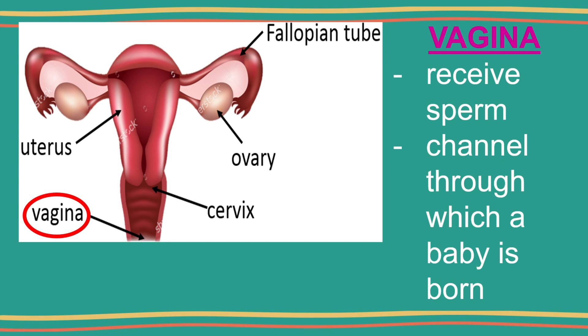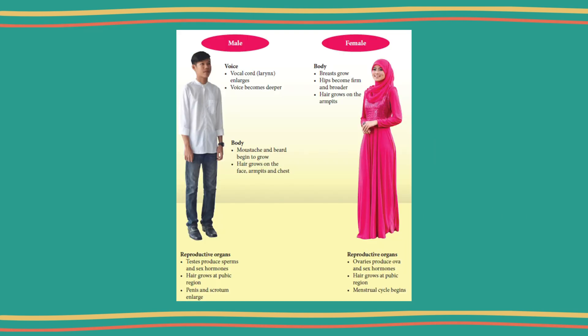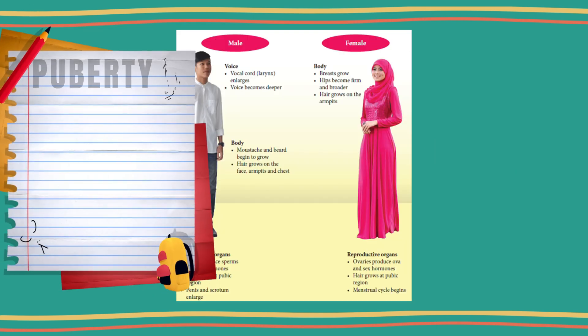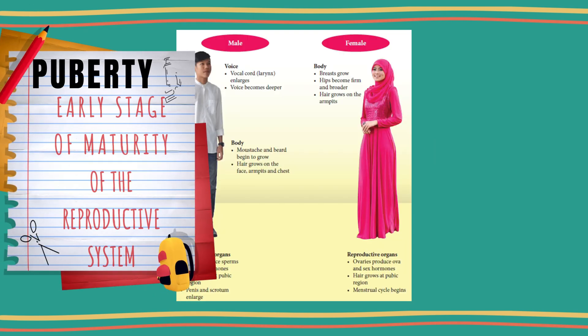The vagina receives the sperms from the penis during sexual intercourse and also serves as a birth canal. Puberty is the early stage of maturity of the reproductive system.